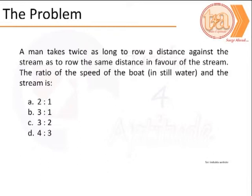The ratio of the speed of the boat in still water and the stream is: a. 2:1, b. 3:1, c. 3:2, d. 4:3.